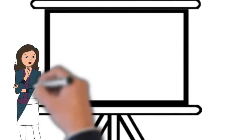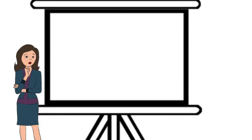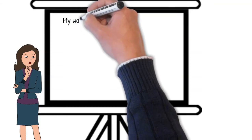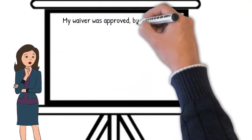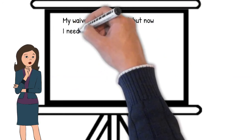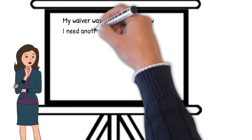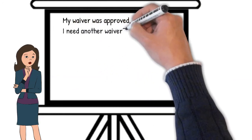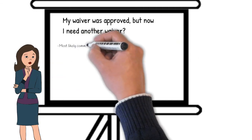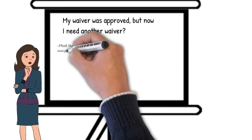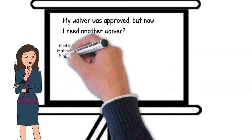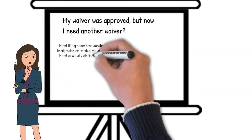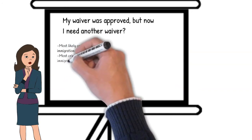Is it true that even with the approval of the waiver of the three or ten year bar, there are times a beneficiary may have to apply for another waiver from outside the U.S.? This scenario occurs when a beneficiary has committed another immigration or criminal law violation. Fortunately, many such violations can be waived by filing Form I-601. However, when having to file such a waiver, the process of obtaining the immigrant visa will be delayed while USCIS processes the waiver application.